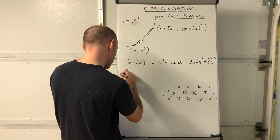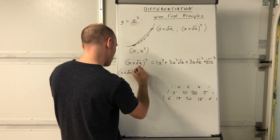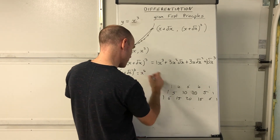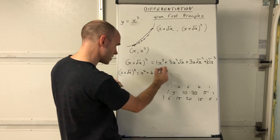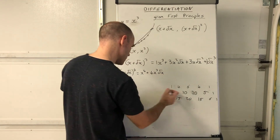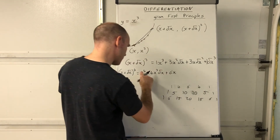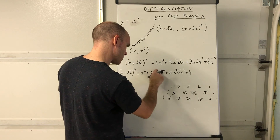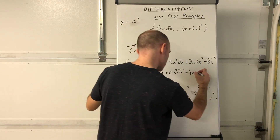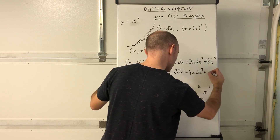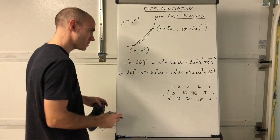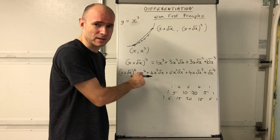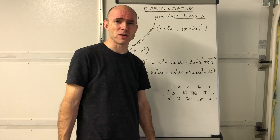So for (x + delta x)⁴ using binomial coefficients 1, 4, 6, 4, 1: you get x⁴ + 4x³·delta x + 6x²·delta x² + 4x·delta x³ + delta x⁴. The powers of x decrease from 4 down to 0, while the powers of delta x increase from 0 up to 4. These help you quickly expand brackets of the form (x + y)^n.